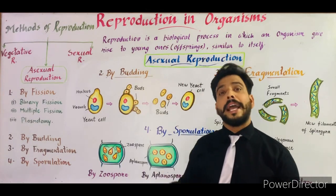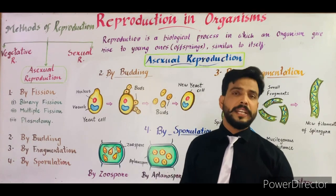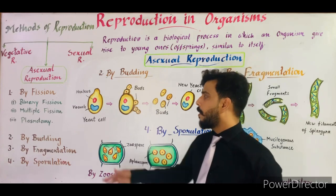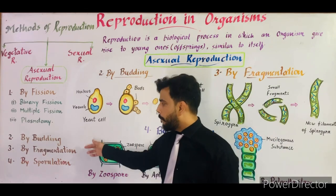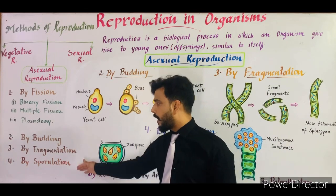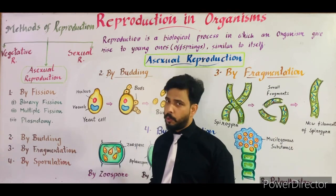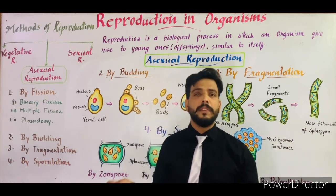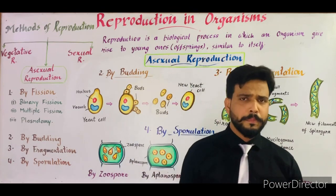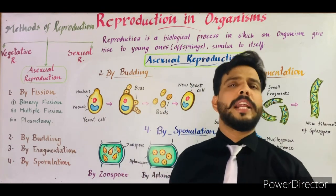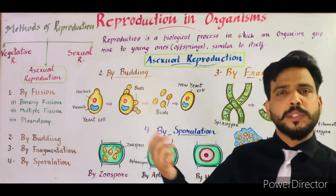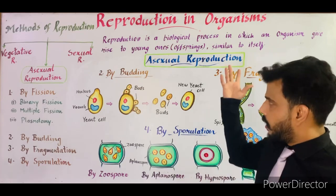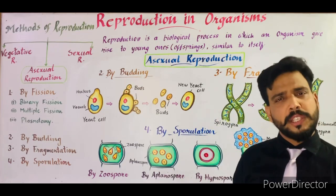In this video I'll tell you about another method of asexual reproduction: by budding, by fragmentation, and by sporulation. These three methods will be described in this video. Now I would like to summarize the last video first as an introduction to this chapter.